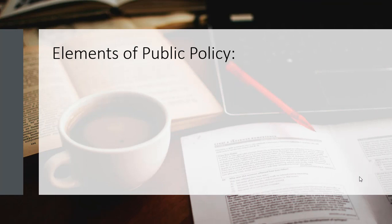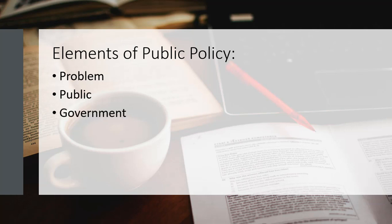From these definitions there are some elements we can deduce. One is that public policy is related to a problem — a situation that the public sees as having negative consequences to the general population or some sections of the population. The next element is that public policy is related to the public, so the problem is seen as a public problem and not a private problem. It is worth noting that a public problem may not necessarily affect the general public, but a section of the public.